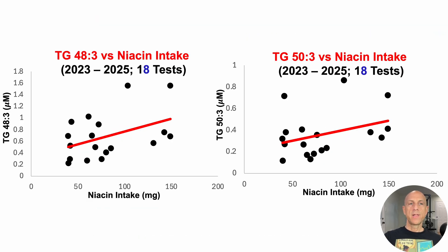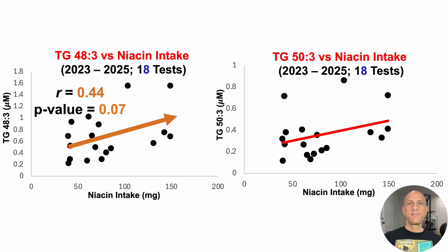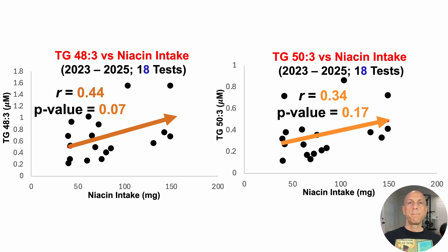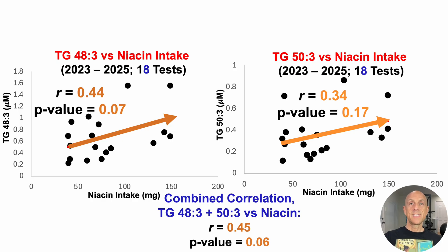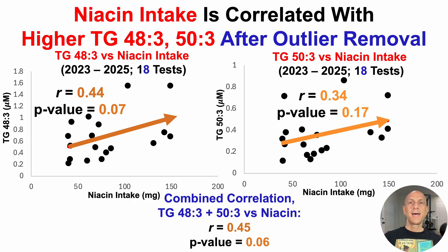With 18 tests after removing the outlier, TG48-3 is still positively correlated with niacin but just outside statistical significance at p=0.07. TG53 is also a positive trend but farther from significance at p=0.17. Combining levels of TG48-3 and TG53 and looking at their association with niacin intake gives p=0.06. With all 19 tests including the potential outlier, it's fair to say niacin intake is correlated with higher levels of TG48-3 and TG53.